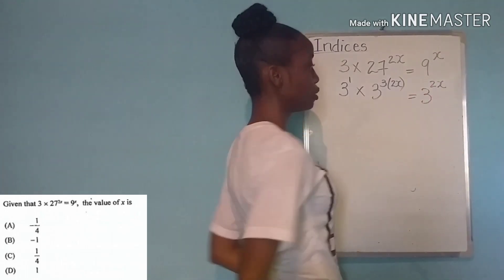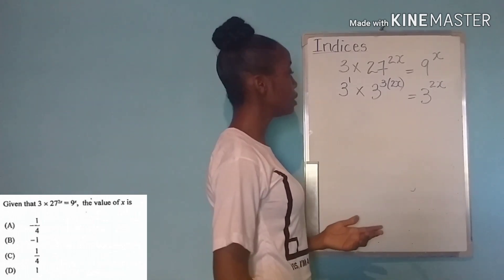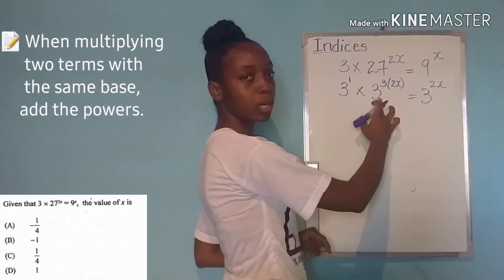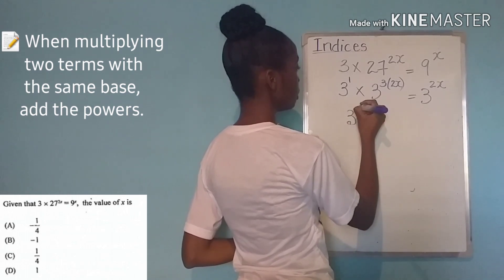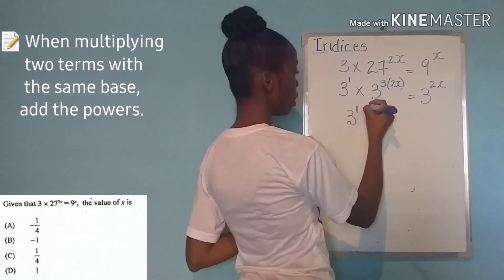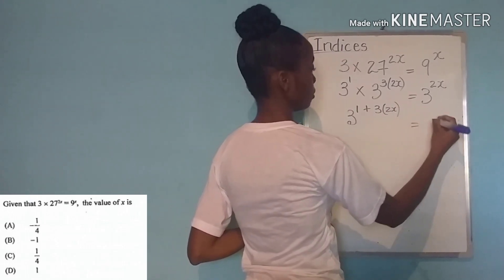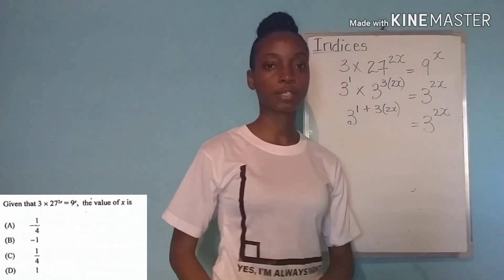Two times x is going to be 2x. And another rule of indices that we know is that if the same base is being multiplied then the powers can be added. So this is going to be 3 to the power of 1 plus 3 times 2x. And that is still equal to 3 to the power of 2x.